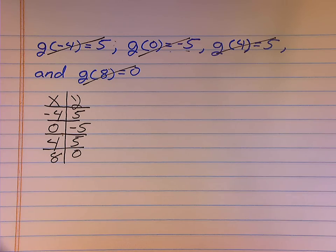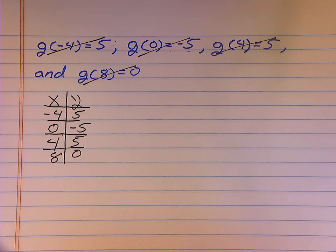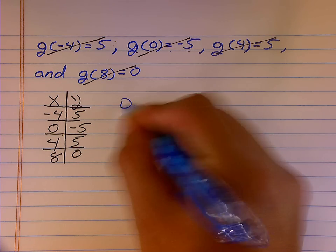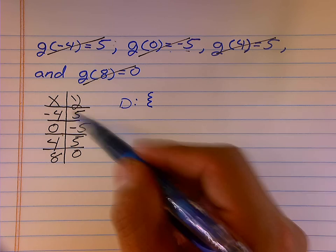So I have rewritten all four pieces of information given in function notation, and I have rewritten this as a table. Now it should be pretty easy to examine our domain. From the table, I will notice my domain is all of the possible x values.